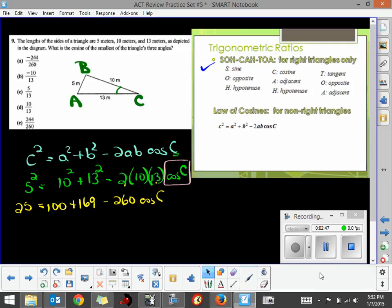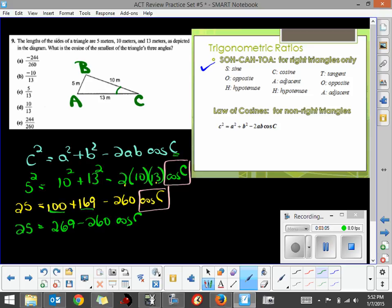I'm still trying to get this cosine of C by itself. I'm going to use some properties where we collect some like terms. We've got 100 plus 169, that's 269 minus 260 times the cosine of angle C.